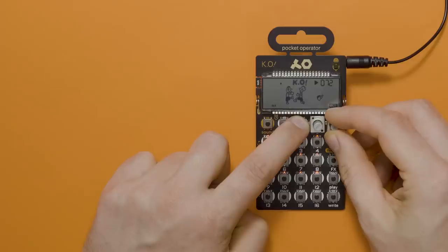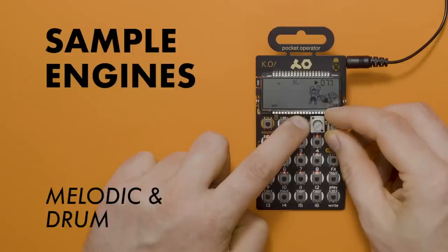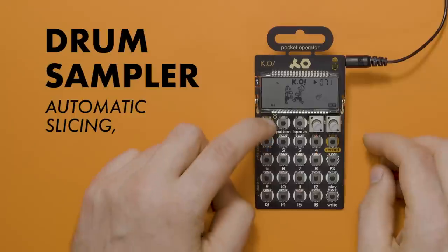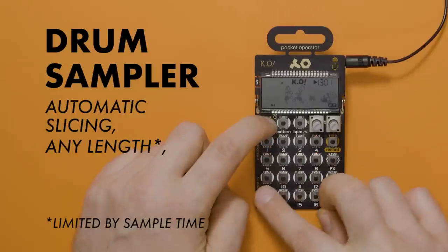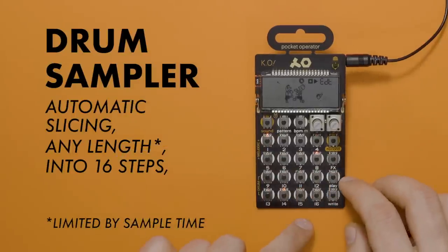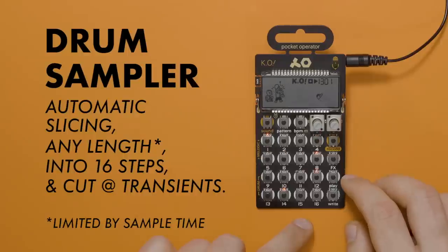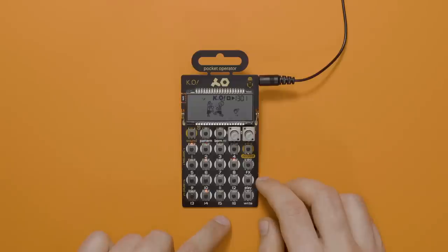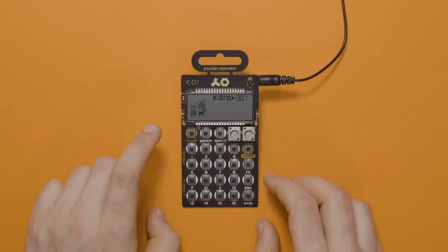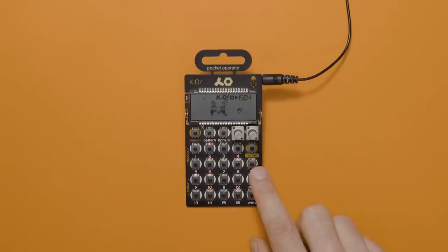For those that don't know, the KO has two sampling engines, melodic and drum. The drum section automatically slices samples of any length that you record into this section into 16 slices based on the transients of the sample. Although this feature is nice to have, it makes building custom drum kits challenging. Until now.